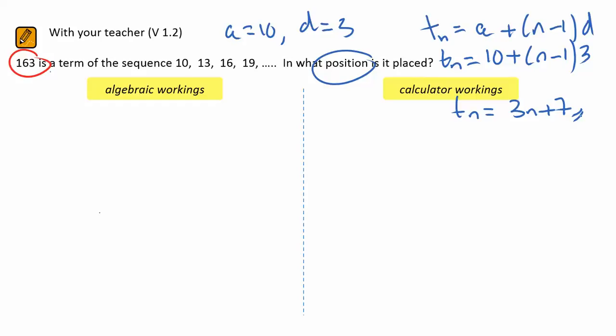Once I've got the sequence, t_n is equal to 3n plus 7, I can then proceed to find the algebraic solution.